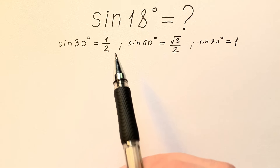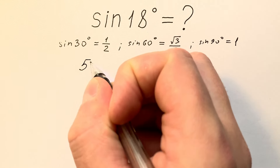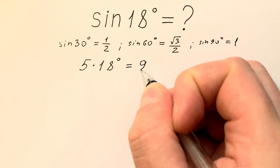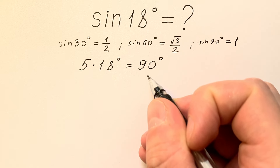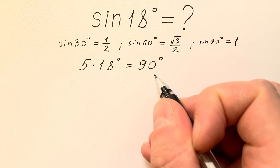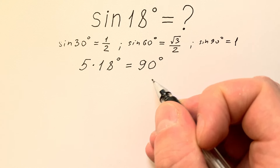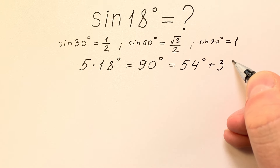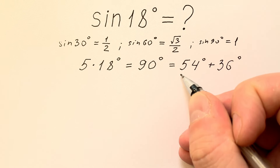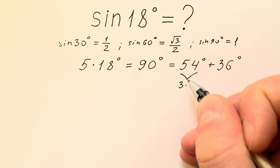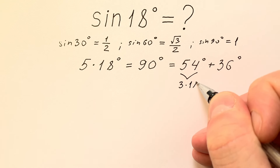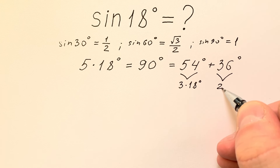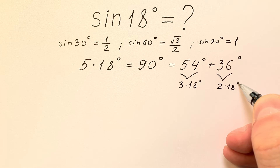But let's try. First, what we can see? 5 times 18 degrees equals 90 degrees. And 90 degrees we can break down into two parts: 54 degrees plus 36 degrees. 54 equals 3 times 18 degrees, while 36 equals 2 times 18 degrees.